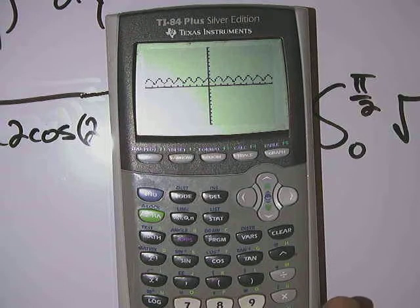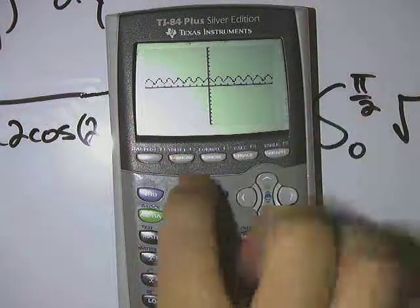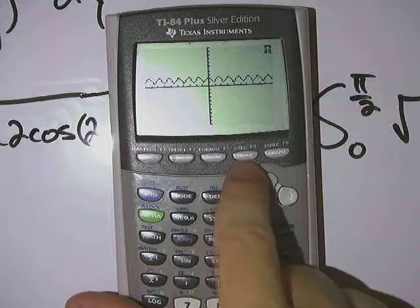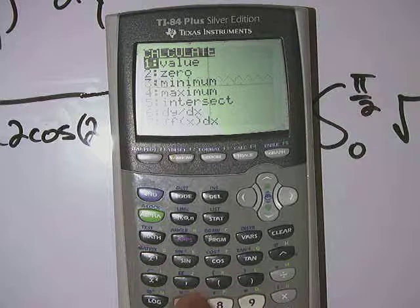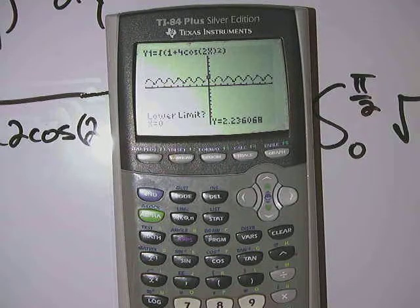Okay, there's our graph. Now, to find the area under the curve over the interval 0 to pi over 2, I'm going to hit 2nd, trace, the 7th one there.